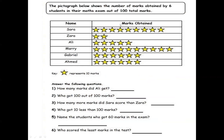The next graph shows marks obtained by 6 students in their maths exam out of 100 total marks. The key says 1 star represents 10 marks. How many marks did Ali get? Ali has 5 stars, so 5 into 10 is 50 marks. Who got 100 out of 100? That would be someone with 10 stars. Mary has the most stars — counting gives 10 stars — so Mary got 100 out of 100.